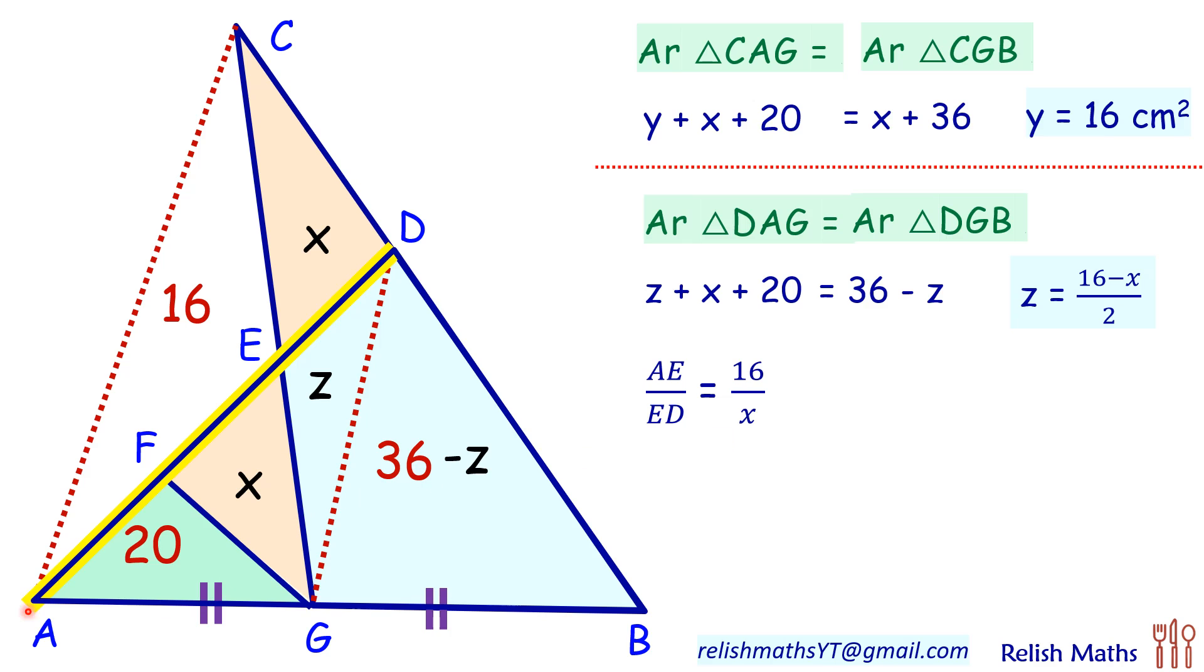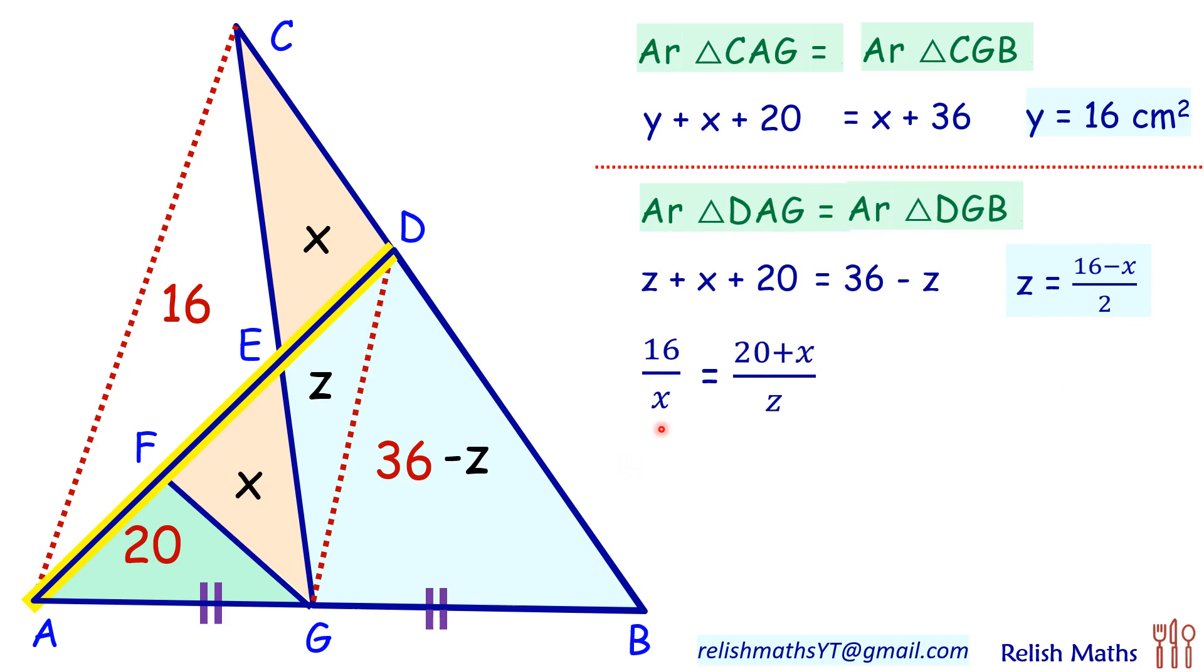Same can be said for the triangles which are forming below, that is triangle AGE and EGD. Their vertex is same and they are on the same baseline. So we can say AE upon ED will be same as 20 plus X upon Z. So we will compare the ratios to get 16 by X equals 20 plus X upon Z.